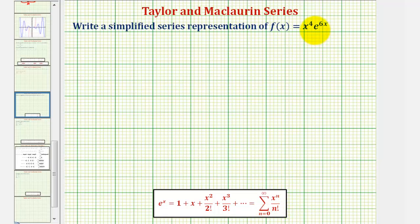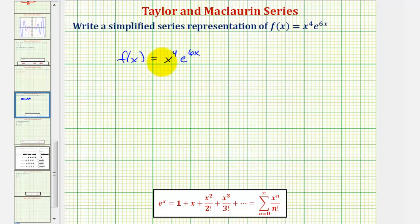So we can find the power series for e to the six x by substituting six x for x in this power series, and then we can multiply by x to the fourth. So our function f of x equals x to the fourth times e raised to the power of six x is equal to x to the fourth times the summation from n equals zero to infinity of six x to the nth divided by n factorial.